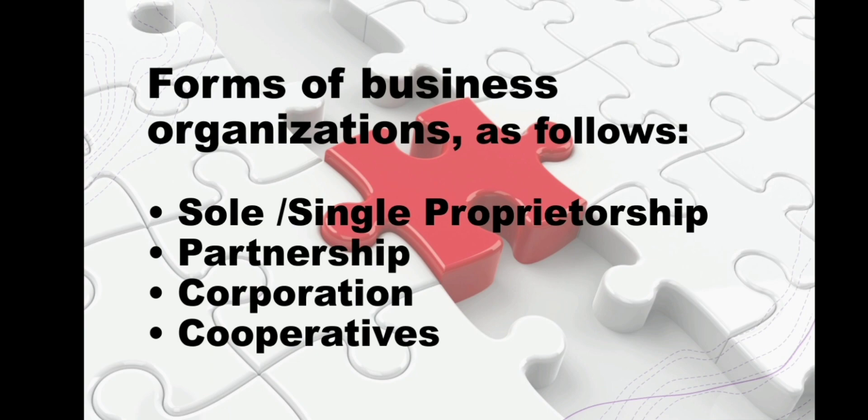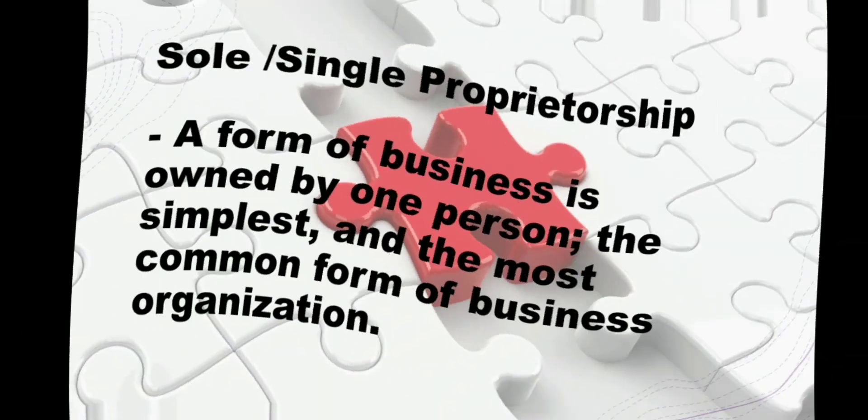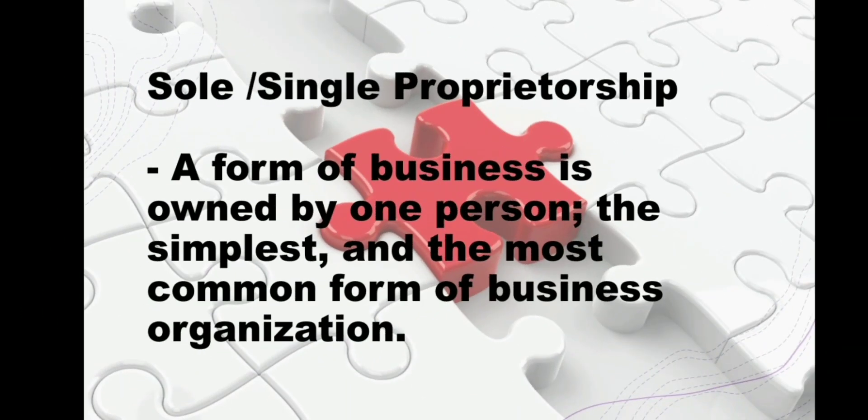First, we have the sole proprietorship. It is a form of business owned by one person — the simplest and the most common form of business organization. For example, suppose you want to open your own sari-sari store.